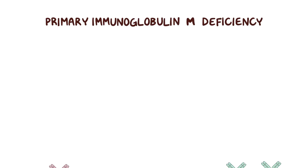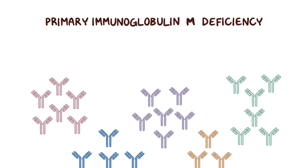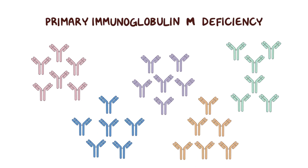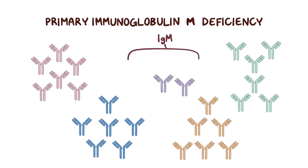In isolated primary immunoglobulin M deficiency, there is a decrease in the number of IgM antibodies in the blood, while the levels of other types of antibodies remain normal.